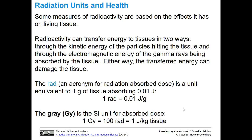Other measures of radioactivity are based on the effects that it has on living tissue. Radioactivity can transfer energy to tissues in two ways: first, through the kinetic energy of particles hitting the tissue, and second, in the case of gamma rays, through electromagnetic energy absorbed by the tissue. Either way, the transferred energy damages the tissue — it can damage organs and whatever it comes in contact with.